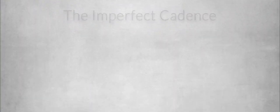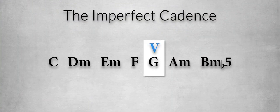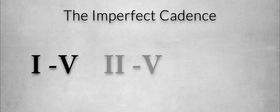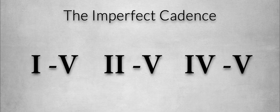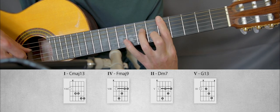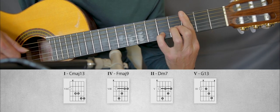The imperfect cadence is an unfinished cadence, and it asks for the music to go on. This cadence always ends on the fifth degree of the scale, which is the dominant chord. This chord creates tension and wants to resolve to the tonic. Possibilities for this cadence are the 1-5 progression, the 2-5 progression, and the 4-5 progression. An example of an imperfect or half cadence would sound like this, and in a minor key you could play something like this.